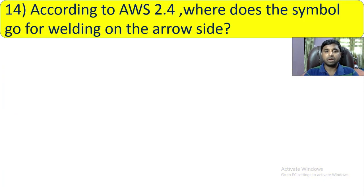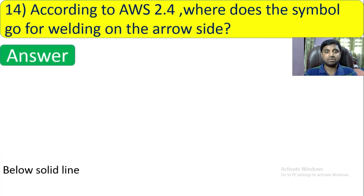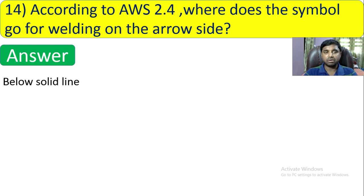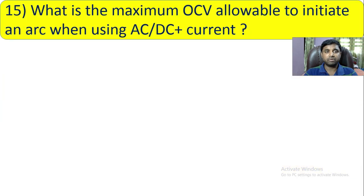Question number 14: According to AWS A2.4, where does the welding symbol go for the arrow side? In AWS A2.4, the symbol on the arrow side means it should be below the solid line. Below the solid line indicates the arrow side.